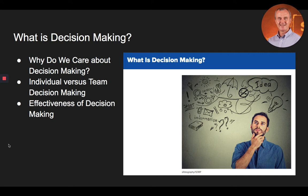Satisficing means that a decision maker accepts an available option as being satisfactory. In summary, organizations come into existence and sustain themselves because of decisions made by individuals and teams. To make effective decisions, insight into the complexities of individual and team decision making processes is necessary. Perhaps the most fundamental complexity is that the effectiveness of decisions can be judged in different ways. For example, accuracy may be important in some settings, consensus is important in others, and in some situations, all that really matters is that an acceptable decision gets made in a timely manner.